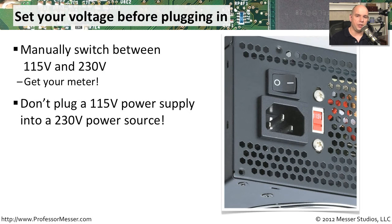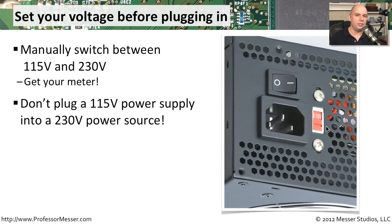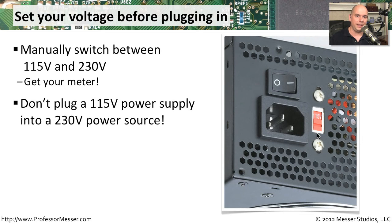Some power supplies have a physical switch on the back that switches between 115 volts and 230 volts. If you're going from one country to another, make sure that switch is set correctly. If you aren't certain of the voltage coming out of the wall, grab your multimeter, connect it to the wall socket, and see what voltage it registers. If there's a 230 volt source and you've configured the supply for 115 volts, it will overload and destroy that power supply very quickly.